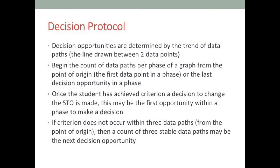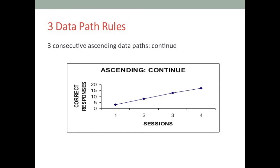The decision protocols are determined by the trend of the data path — the line drawn between two data points. We begin the count per phase from the first data point, and once the student achieves criterion, we change the short-term goal. There are three data-path rules and five data-path rules. When the trend is stable — for example going up, up, up — we do a count of three stable ascending paths. If the direction is ascending and the student is learning, we continue.